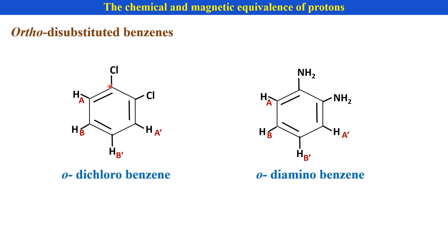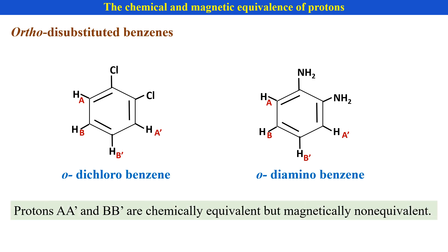Other examples are orthodichlorobenzene and orthodiaminobenzene. In both examples, HA and HB — and A, A', B, B' — are chemically equivalent but magnetically non-equivalent protons, for the same reason.